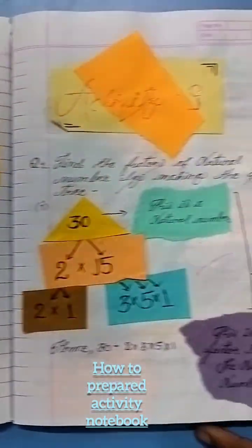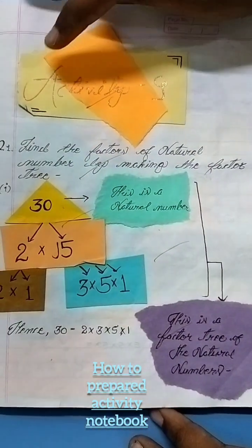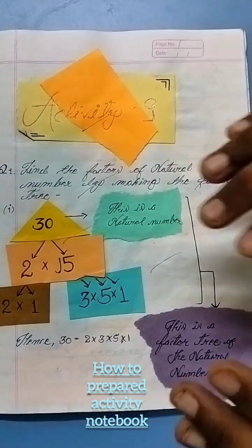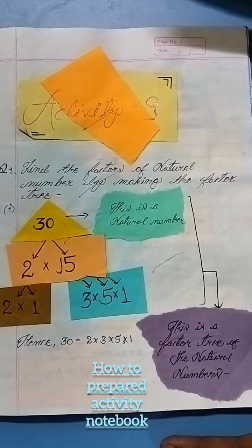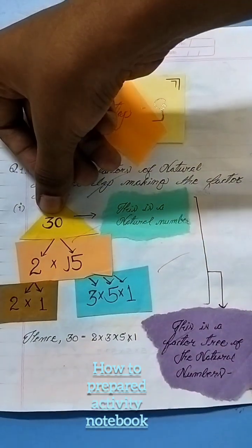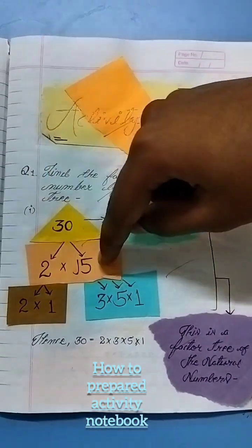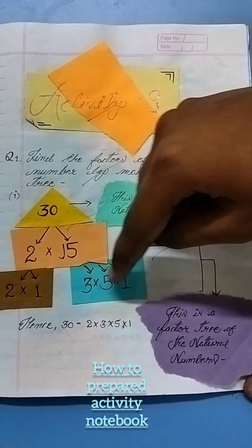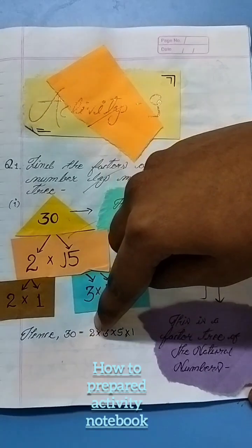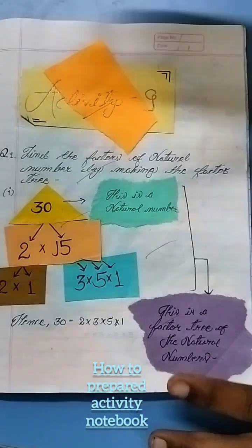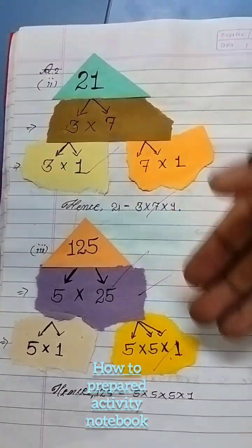The ninth activity is about finding the factors of natural numbers by making a factor tree. By making the factor tree, students can better understand how we find the factors of natural numbers. For example, 30 is a natural number: 30's factors are 2 and 15; 2's factor is 2×1; 15's factors are 3×5×1. Hence, 30 = 2×3×5×1. Based on the factor tree, students can understand the chapter factorization of natural numbers. Some examples are shown here.